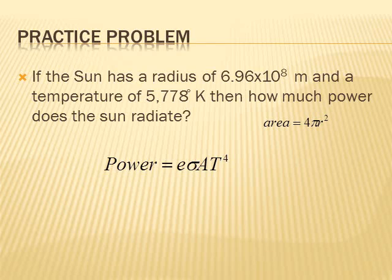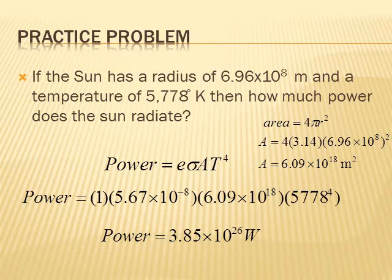Once you've done so, you will find that the surface area turns out to be 6.09 times 10 to the 18th square meters, and then when you take this surface area and you plug it into the equation, you will find that the answer should be 3.85 times 10 to the 26 watts. So that means that the Sun is giving off 3.8 times 10 to the 26 joules every single second. That's a whole lot of energy.